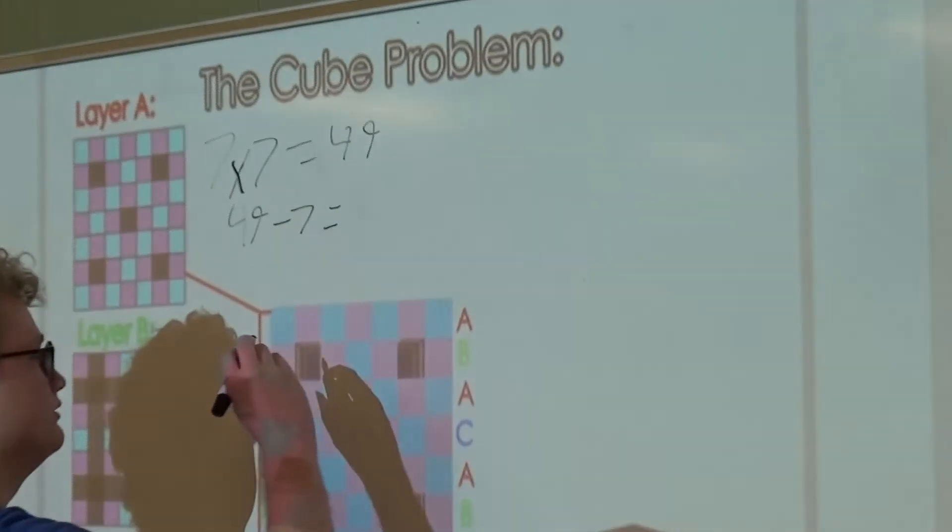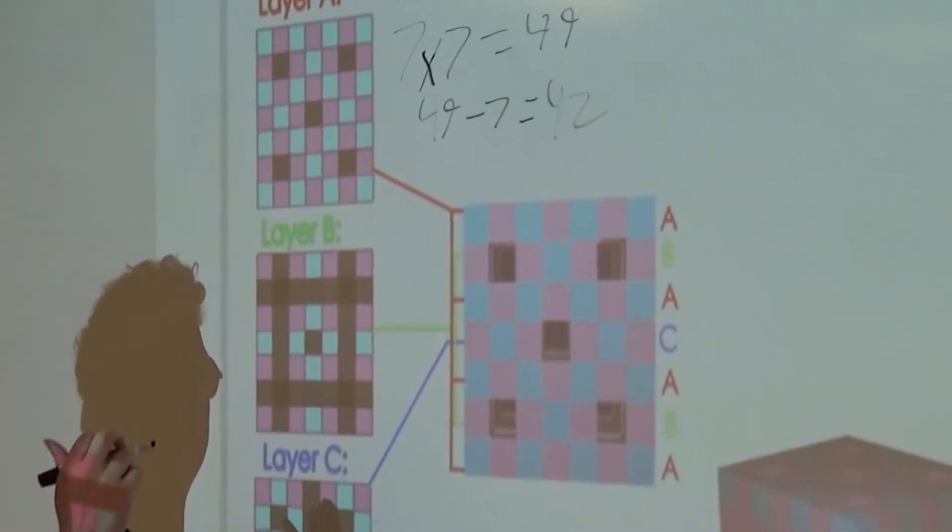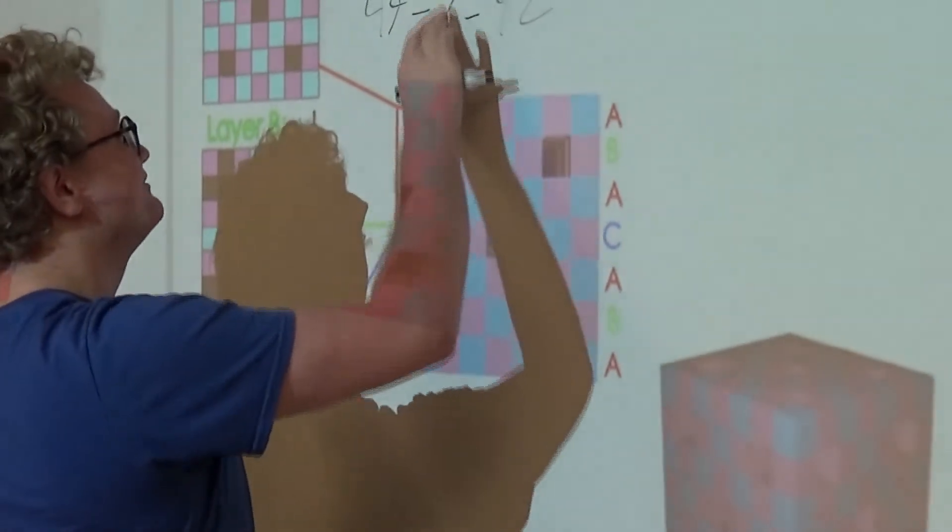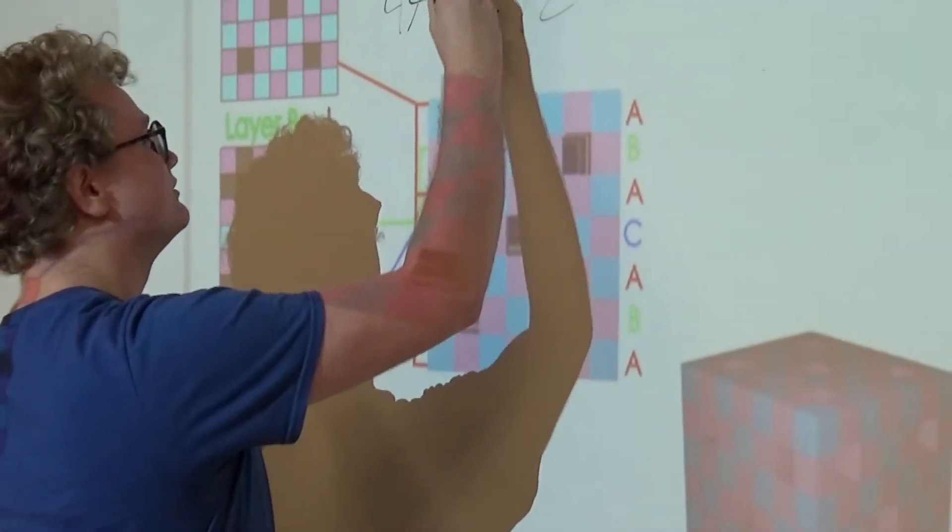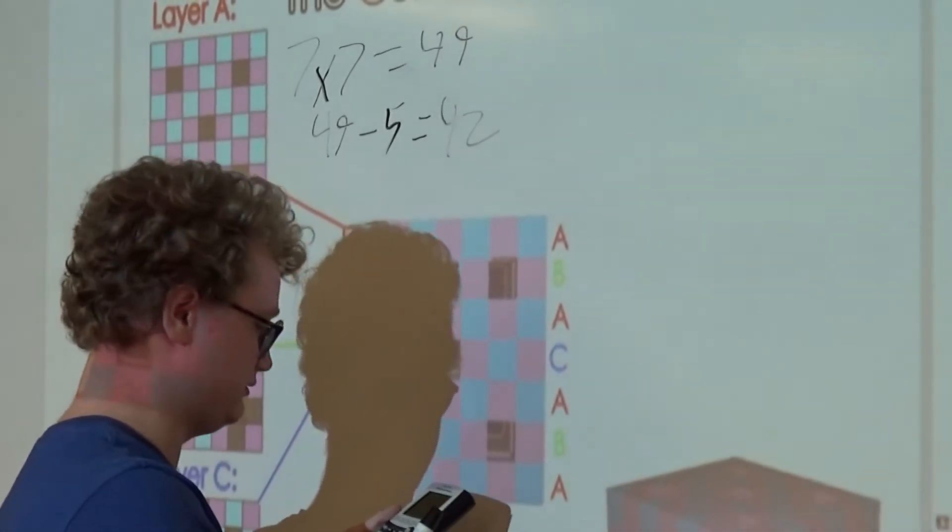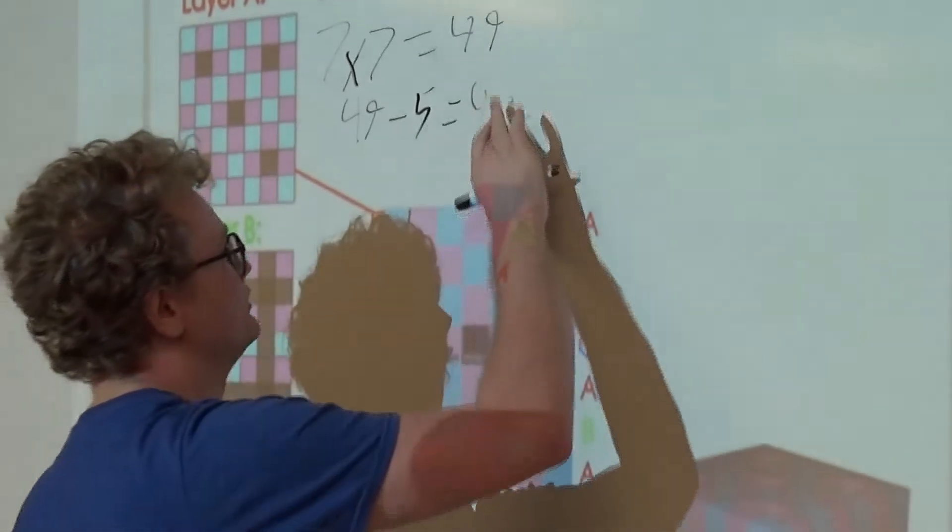49 minus 7 is 44, I think. 42... not bad at math. So we have 42 cubes... 49 minus 5 is 44, I think. There we go.